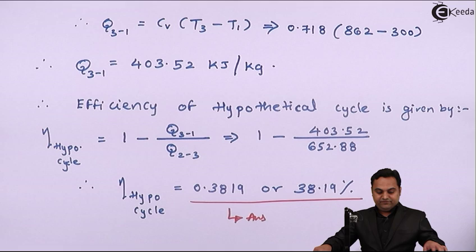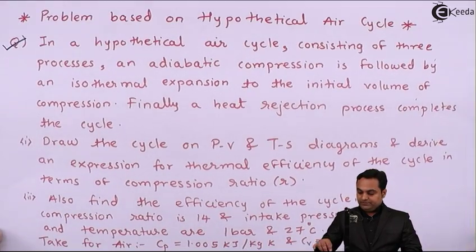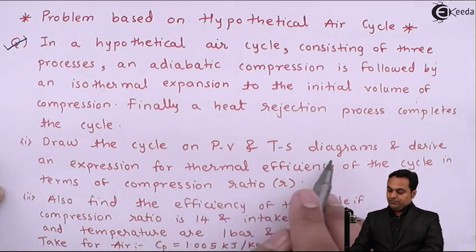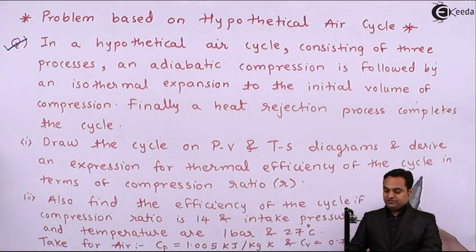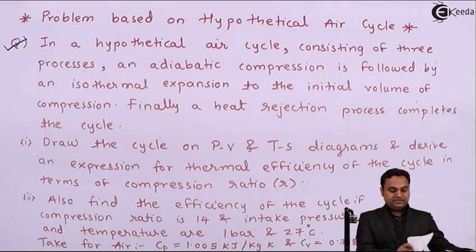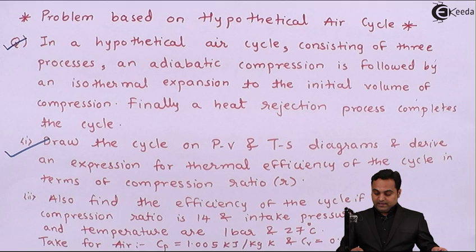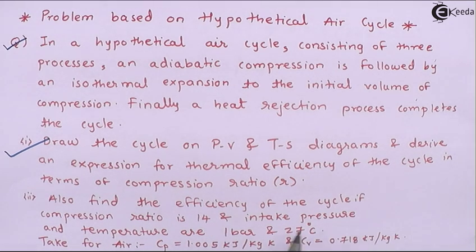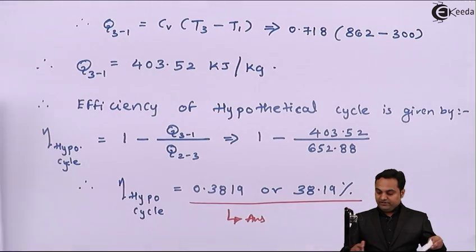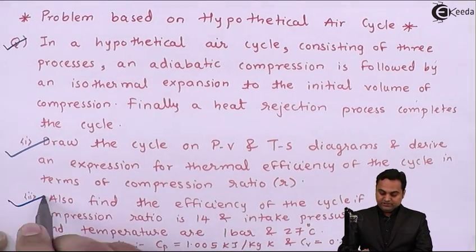So the efficiency of the hypothetical cycle under the given conditions is 38.19%. To summarize: we drew the PV and TS diagrams for the hypothetical cycle, derived the efficiency expression in terms of compression ratio r, and then calculated the numerical efficiency as 38.19% for a compression ratio of 14, with intake conditions P1 = 1 bar and T1 = 27°C. With this the problem is complete.